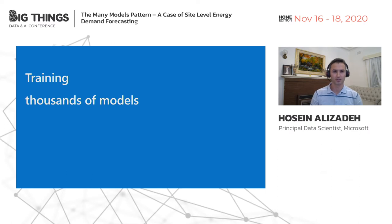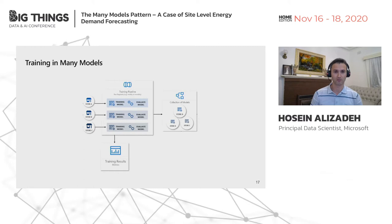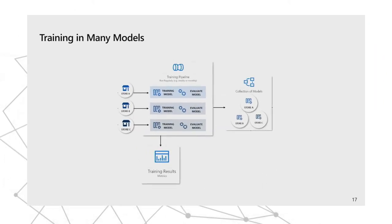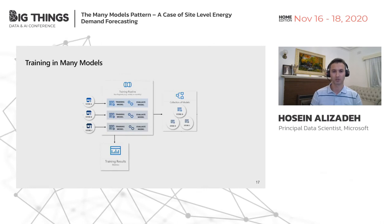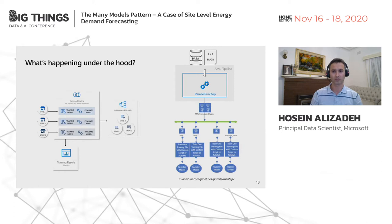Let's look further in detail at the training side of the many models solution. On the training side, all we need to do is provide the many models solution with some training scripts for one dataset. The many models solution then takes that data and that script and runs it in parallel, providing results — basically the models — and registering them in the model registry. Looking under the hood: on the right-hand side, data and a training script are provided to the many models solution.